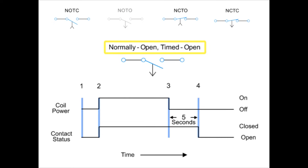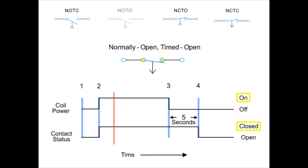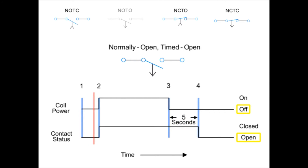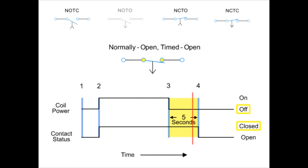Next, we have the normally open, timed open contact. Similar to the normally open, timed closed contact, this type of contact is normally open when the coil is unpowered or de-energized, and closed by the application of power to the relay coil. However, unlike the NOTC contact, the timing action occurs after the coil is de-energized for five seconds.